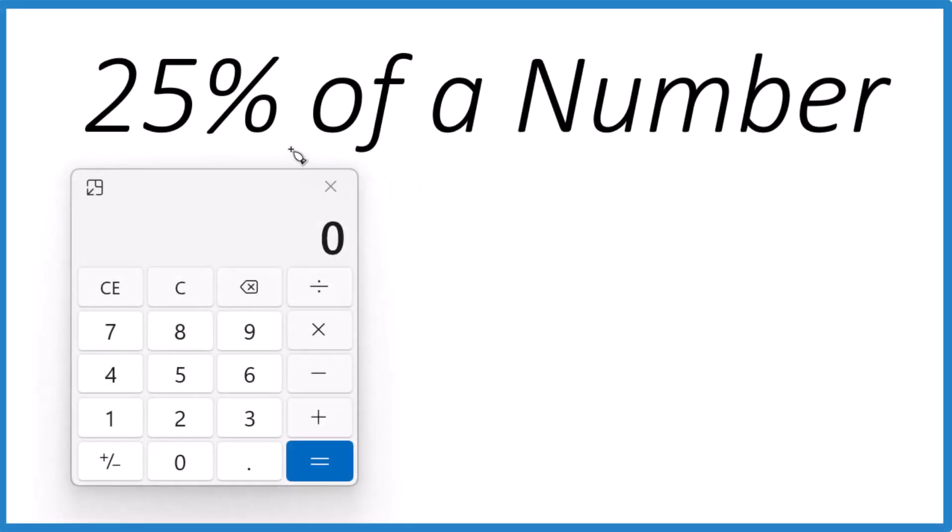This is Dr. B, and we're going to quickly and accurately learn how to take 25% of a number. First off, we want to take 25 over 100, because percent means per 100. So 25 divided by 100, that's 0.25.